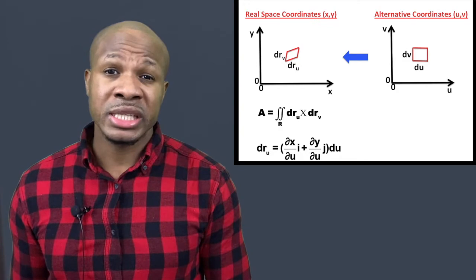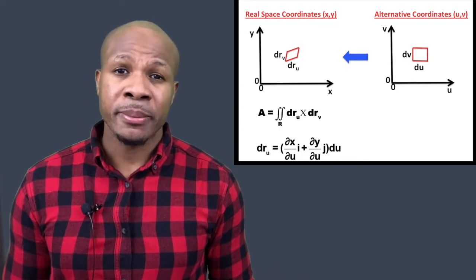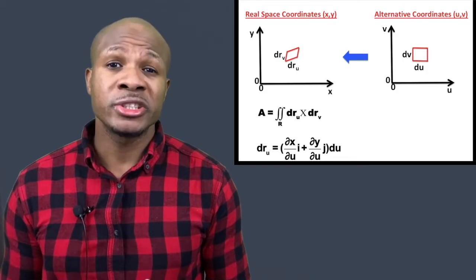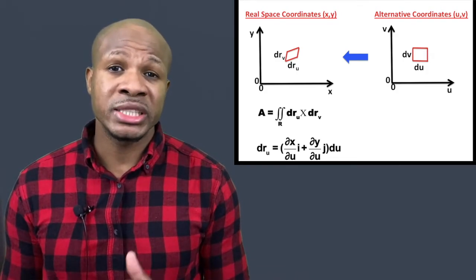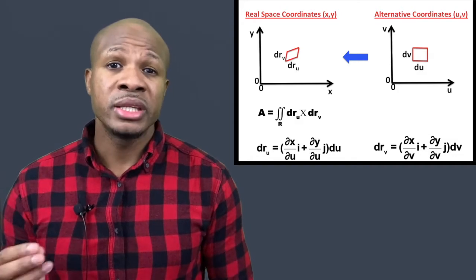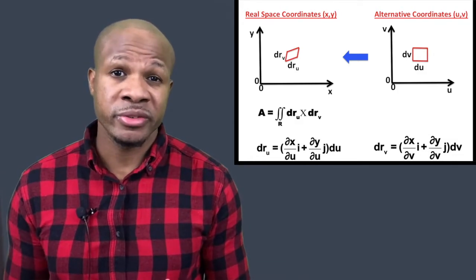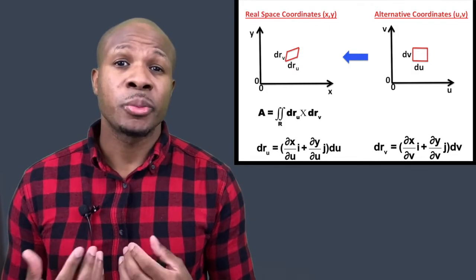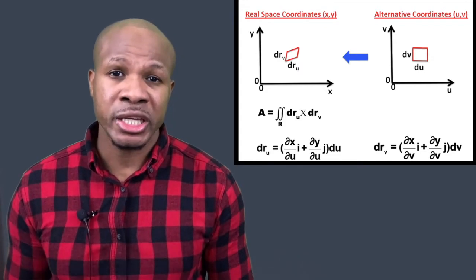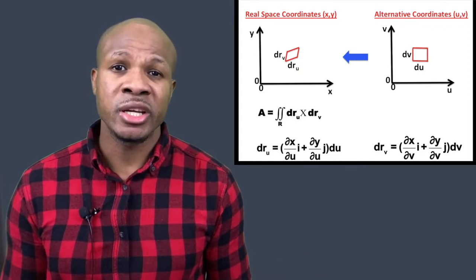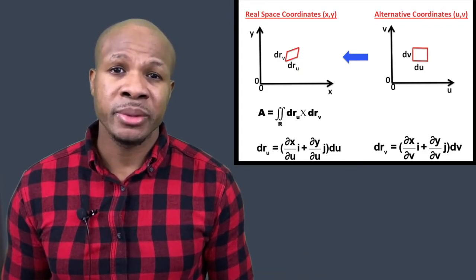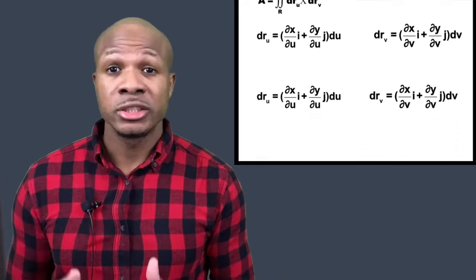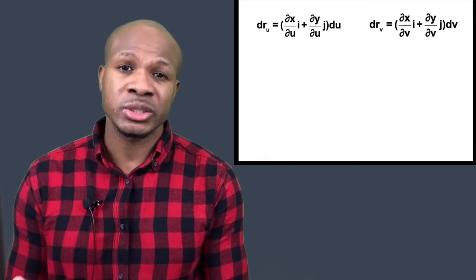We multiply by du to cancel the du in the denominators and get the actual change in x and y. Similarly, dr_v equals the partial derivative of x with respect to v (i-component) plus the partial derivative of y with respect to v (j-component), multiplied by dv. This gives us the segment dv plotted in real space.